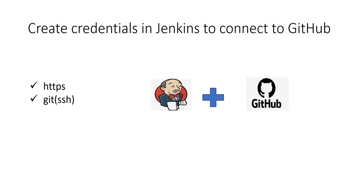Before creating credentials in Jenkins, we need to understand how GitHub allows connections from clients. Generally, GitHub allows client connections using two protocols: HTTPS and SSH. Using HTTPS, clients need to connect to GitHub using an access token. Using SSH protocol, clients need to connect using the private key on the client machine and the public key stored in the GitHub server.